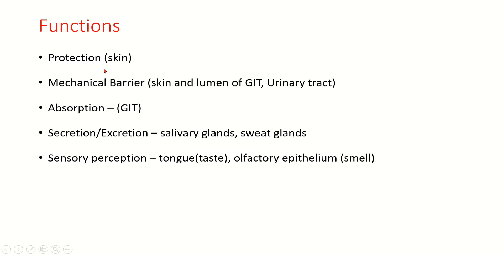Functions of epithelial tissue: protection — for example, the epidermis of skin; mechanical barrier — skin and lumen of the GIT and urinary tract; absorption — gastrointestinal tract; secretion or excretion — salivary glands and sweat glands; and sensory perception — the tongue, taste buds, olfactory epithelium for smell.